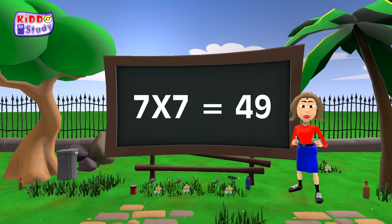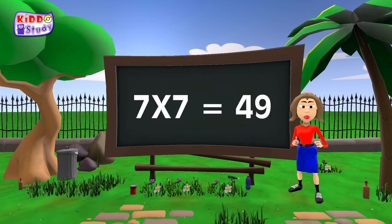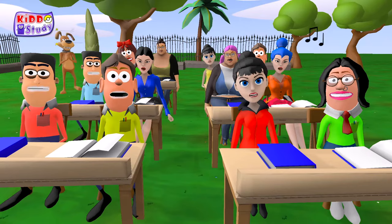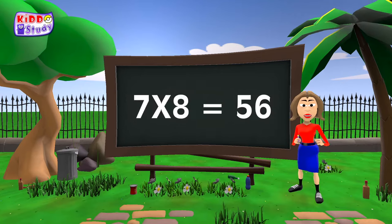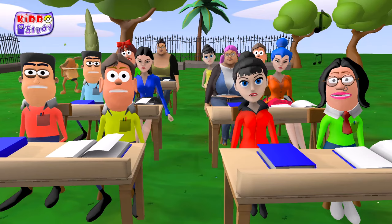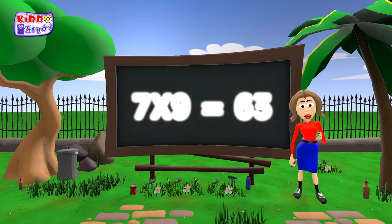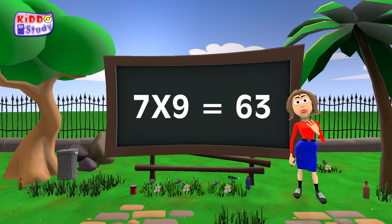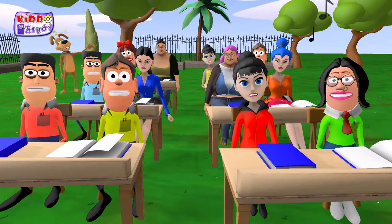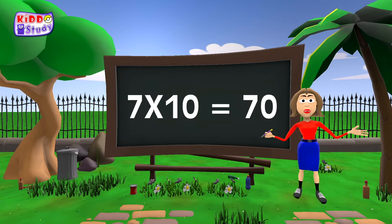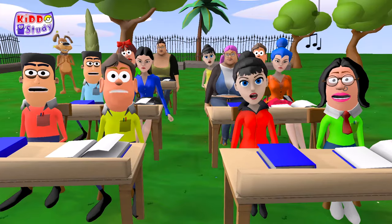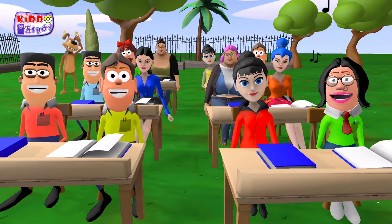7 sevens are 49. 7 eights are 56. 7 nines are 63. 7 tens are 70.